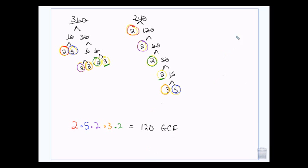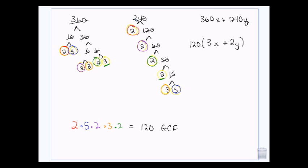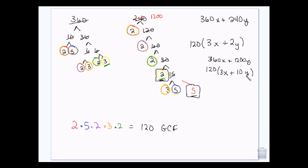If this were a factoring problem like 360x plus 240y, I would pull my GCF of 120 out, and then 3 got left behind here and 2 got left behind there — and that's what goes inside the parenthesis. If instead it had been 1200y, the only difference is I'd have another 5 at the bottom, so I'd have 2 and a 5 left behind, which is 10. Whatever gets left behind gets multiplied back together and stays inside the parenthesis.